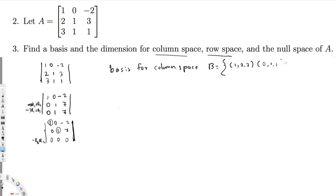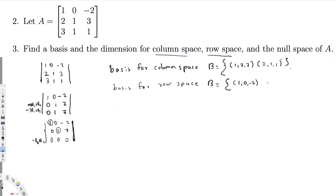The basis for the row space consists of the rows that carry the leading coefficients (pivots) in the reduced row echelon form. The first and second rows carry pivots, so the basis for row space is: {[1, 0, -2], [0, 1, 7]}.